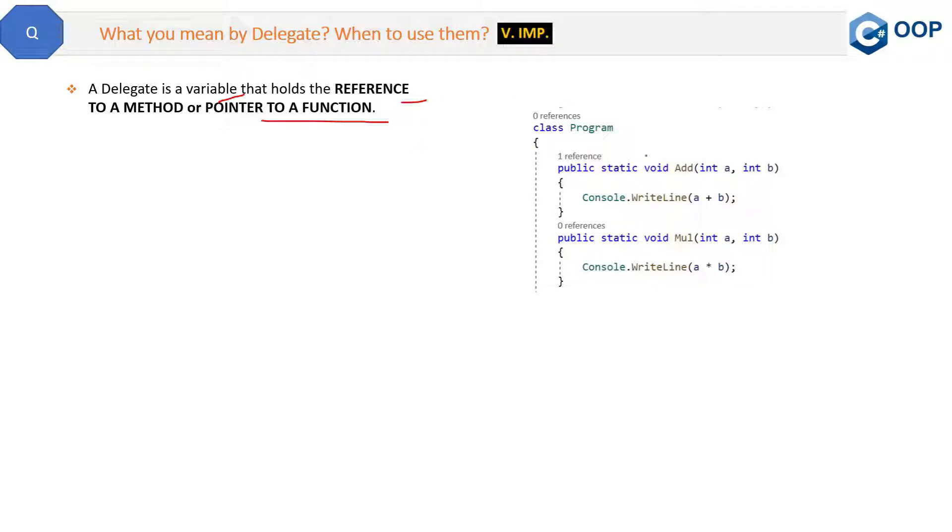See here, inside the program class we have two static methods. One is Add, which is adding two integers and displaying them in the console window. And the second method is Mul, which is multiplying the two integers.